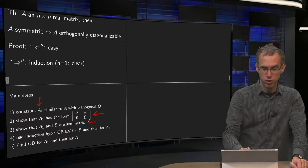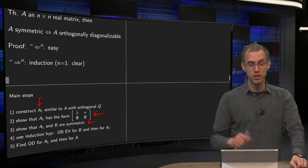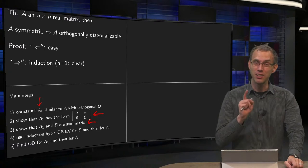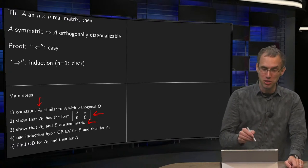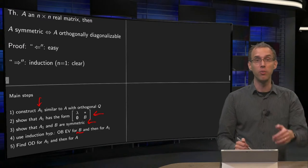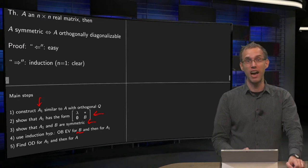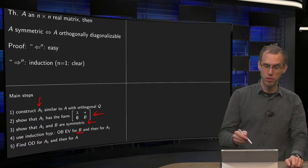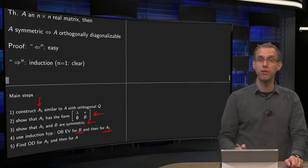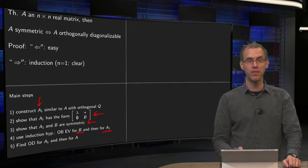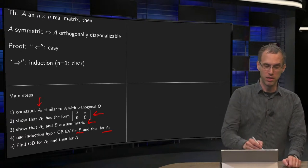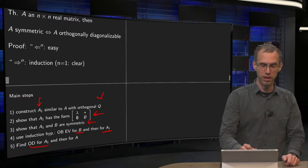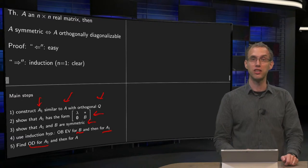In the third step, we show that A1 and B are symmetric matrices. Since B is symmetric, that's the key trick — we can use our induction hypothesis on B, so we know we have an orthogonal basis of eigenvectors for B. Using that orthogonal basis, we construct an orthogonal basis of eigenvectors for A1, and then we have an orthogonal diagonalization for A1, which we use with Q to find an orthogonal diagonalization for A.